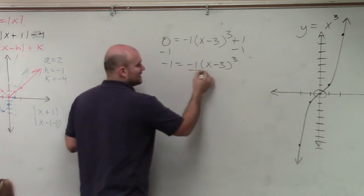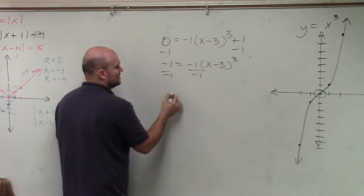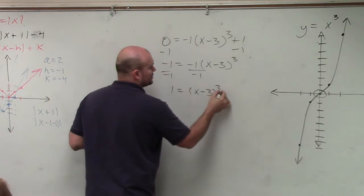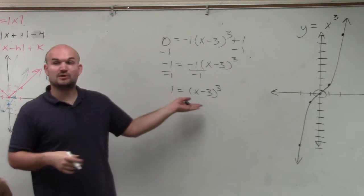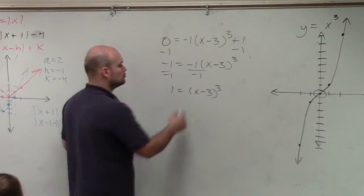Now divide by negative 1. Positive 1 equals x minus 3 cubed. So how do you undo cubing? You have to take the cube root.